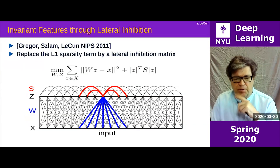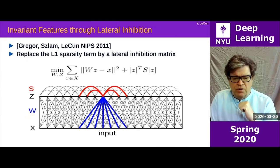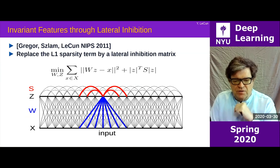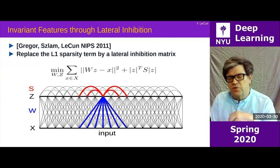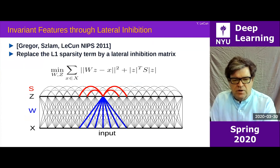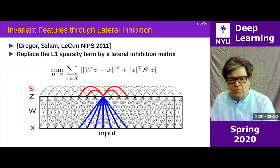Here is another example of an exotic way of doing sparse coding through lateral inhibition. There are a bunch of different ways to do this that people have proposed. This one came from Kyle Greger and Arthur Szlam in my lab about 10 years ago.